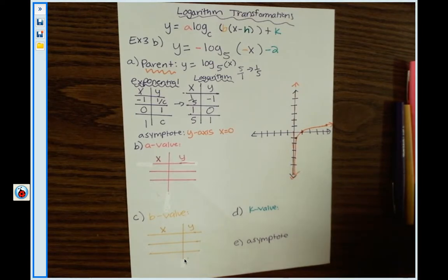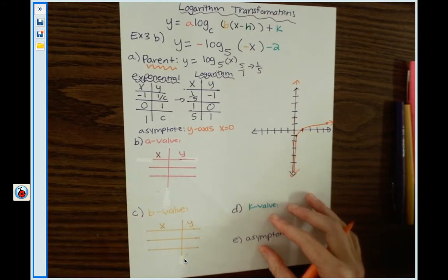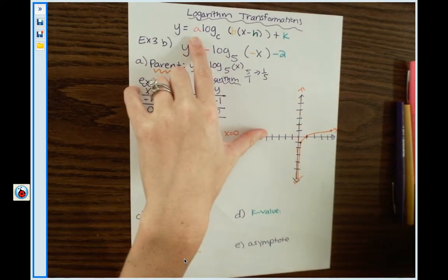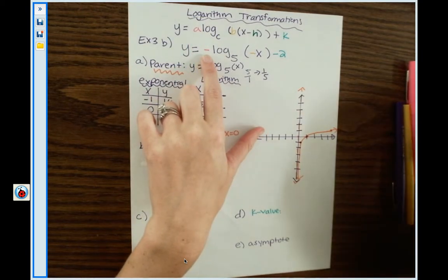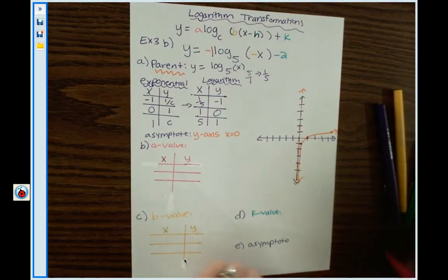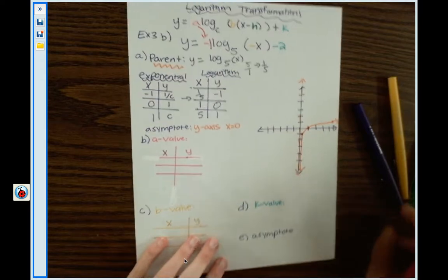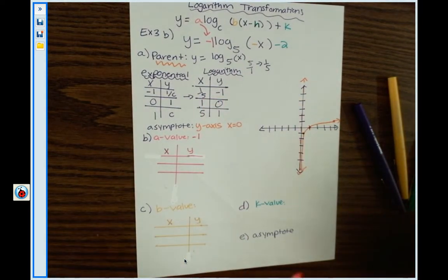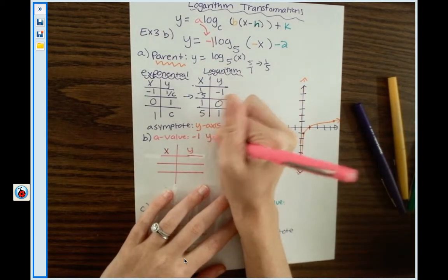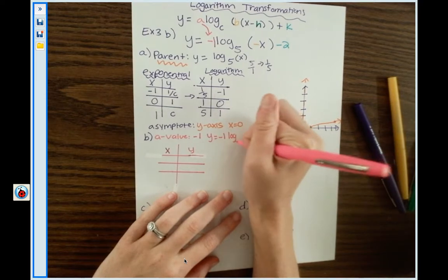When doing transformations, you must conquer the a and b values first — save h and k for last. The a value is the number in front of the log that multiplies it. Here, there's a negative in front of the log, so secretly there's a negative 1 there. So the a value is negative 1. I'm going to add that onto my previous equation: y equals negative 1 times log base 5 of x.